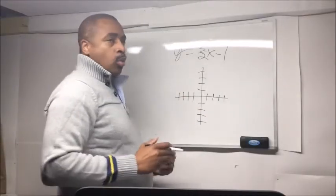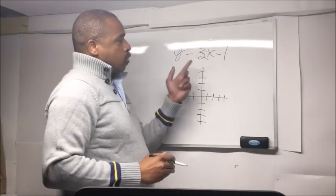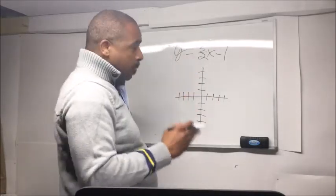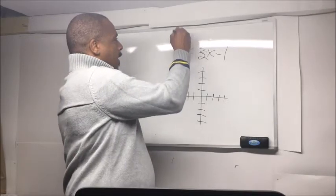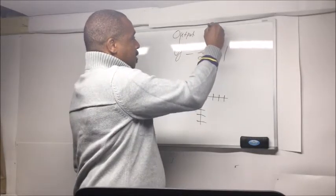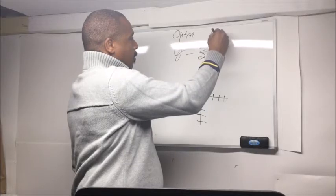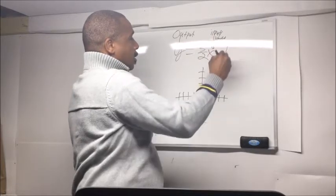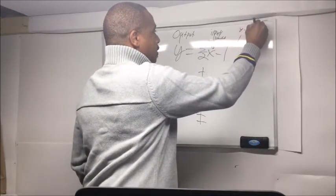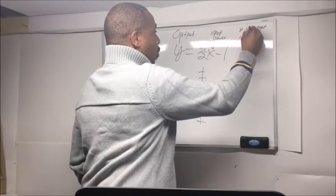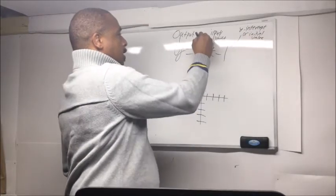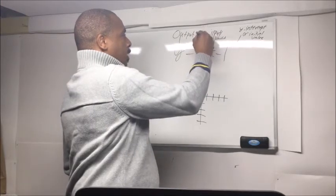The very first thing I want you to understand is that in y equals 3 over 2x minus 1, these things represent something. Y is the output, that's the result. X is the input or the variable, the thing that can change. 1 is the y-intercept or initial value. And this number here, 3 over 2, represents the slope or rate of change.